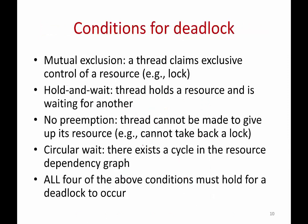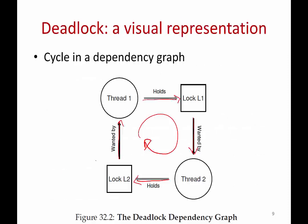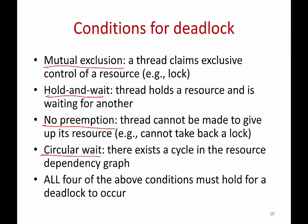For a deadlock to occur, four conditions must hold simultaneously: mutual exclusion (a thread holds a resource exclusively), hold and wait (a thread holds a resource while waiting for another), no preemption (you cannot easily take a lock away from a thread), and circular wait (there is a cycle in the dependency graph). Theoretically, all four conditions must hold for a deadlock — if even one is false, deadlock won't occur.